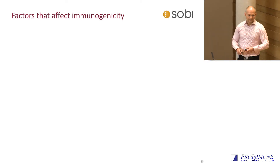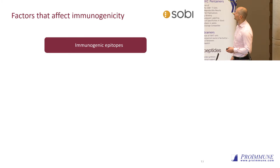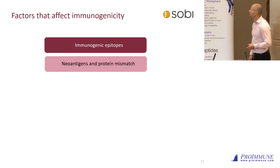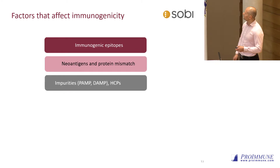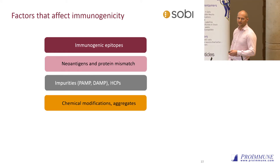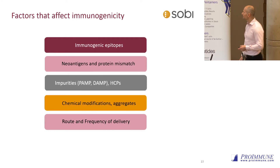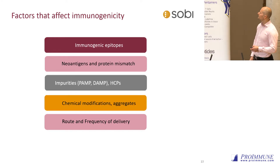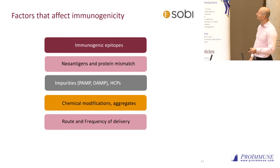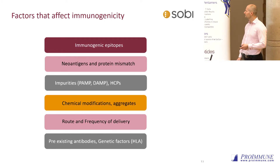Just some repetition on the factors affecting immunogenicity: we can have immunogenic epitopes, we can create neoantigens, protein mismatches, and also impurities — the DAMPs, PAMPs, and HCPs can contribute to immunogenicity. We can also have chemical modifications, aggregates, and process-related problems. The route, frequency of delivery, and dose are important. And you can have pre-existing antibodies and genetic factors like different HLA types.